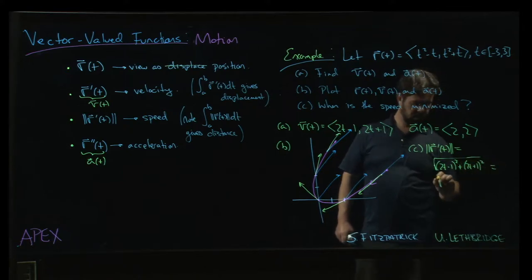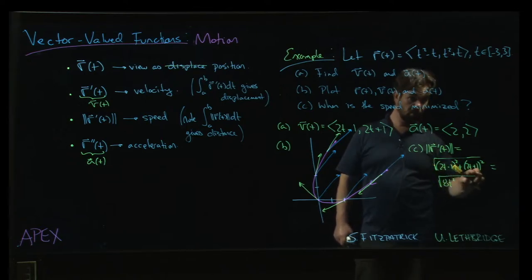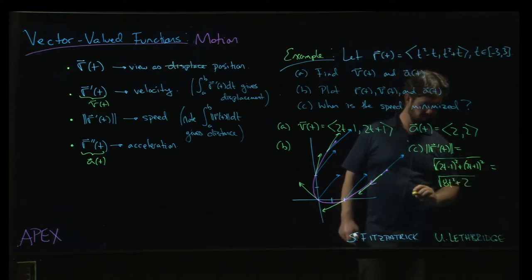Okay, and now that is going to be 4t squared plus another 4t squared, 8t squared minus 4t plus 4t. Those cross terms cancel, and then plus 1 plus 1 plus 2, right?